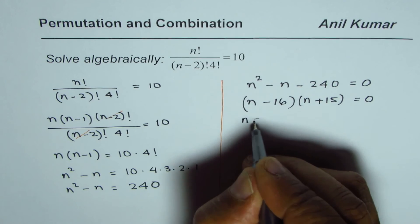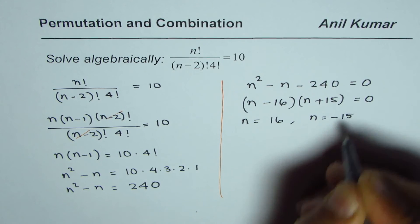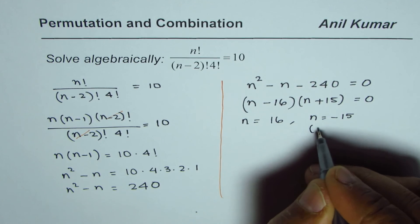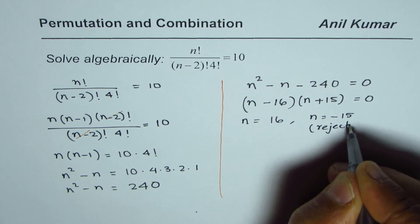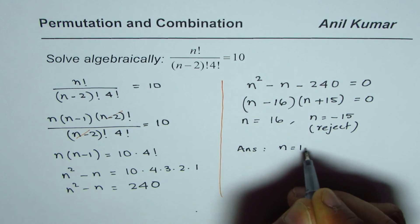From here we can write n equals to 16 or n equals to minus 15. Since n should be positive integer this should be rejected. We'll reject this value and our answer is n equals to 16.